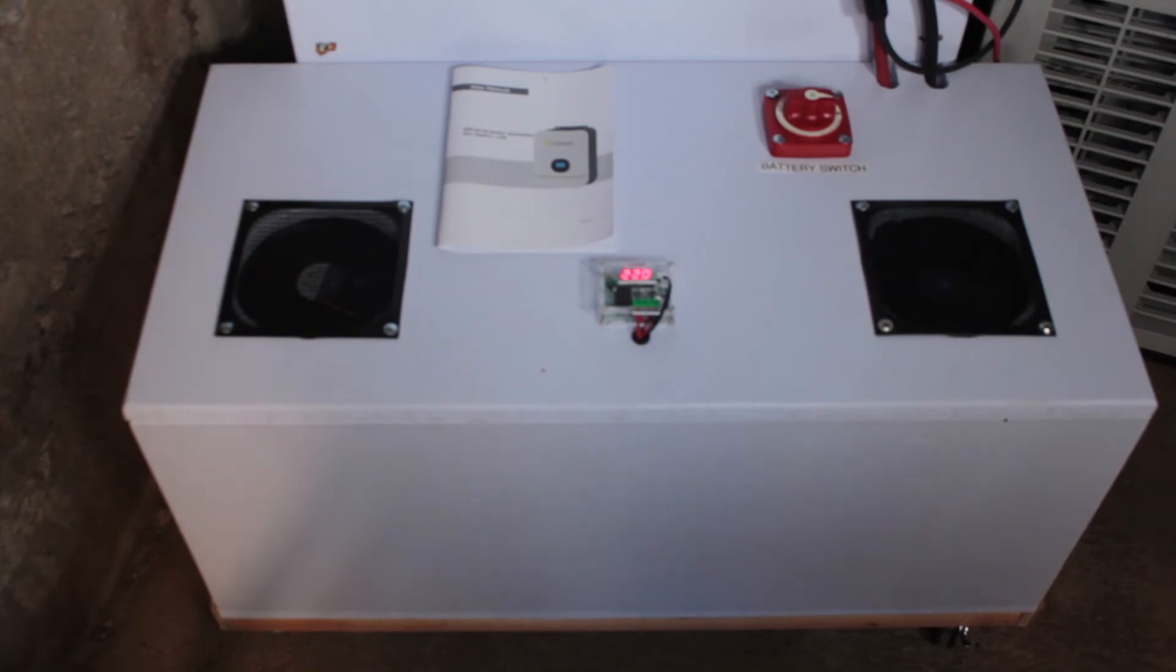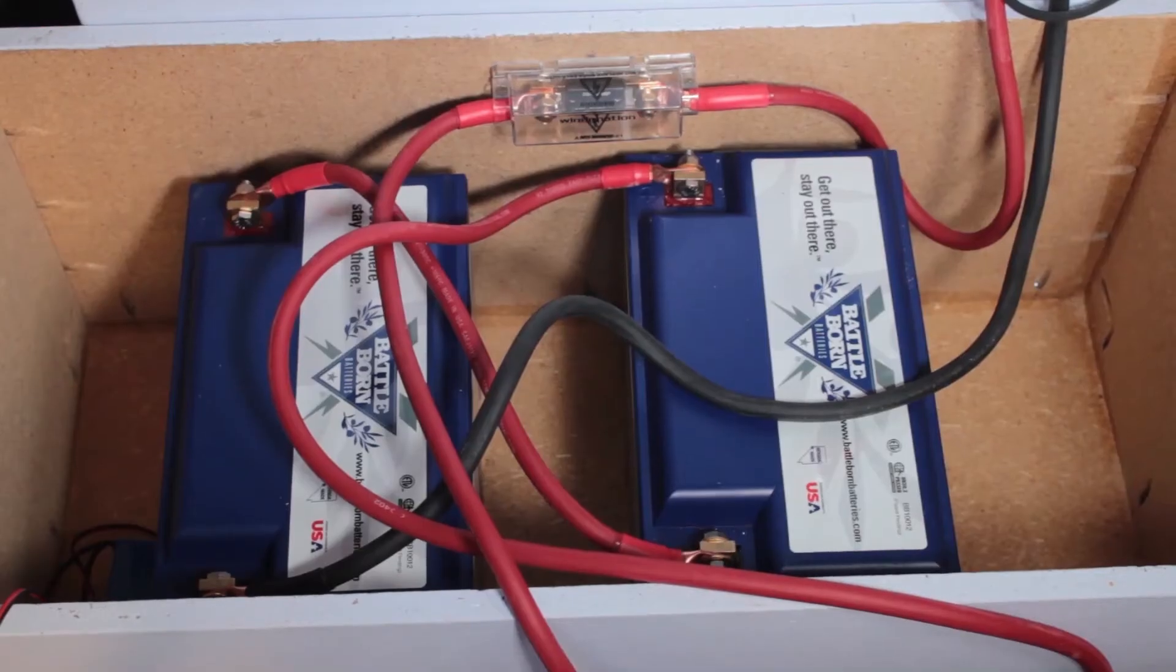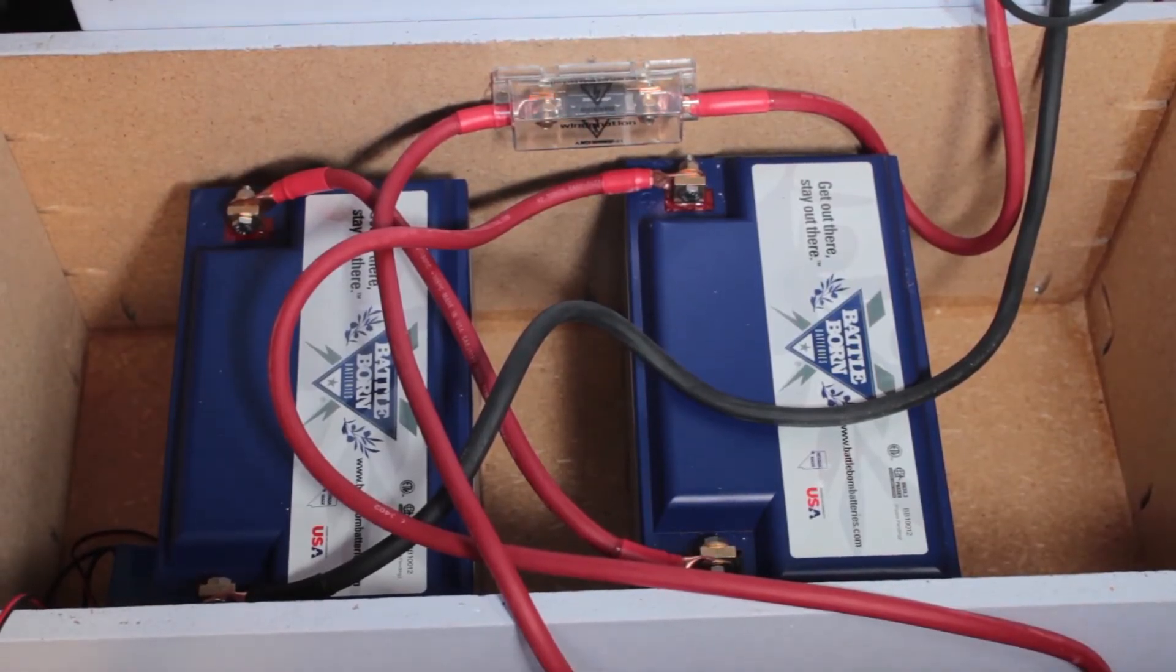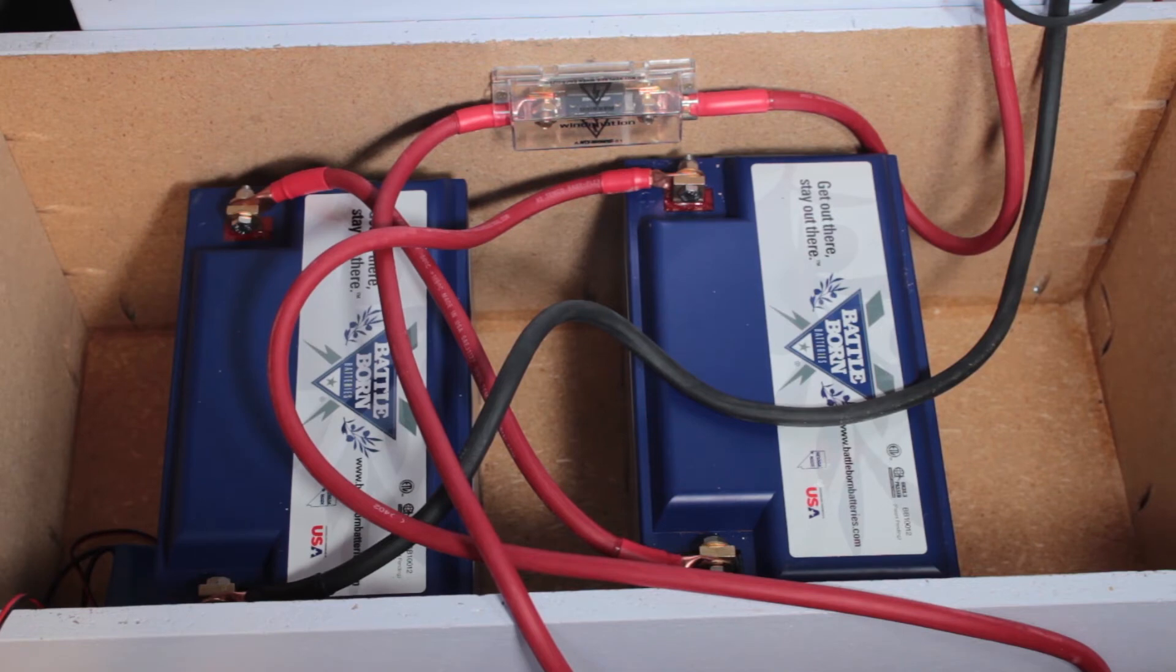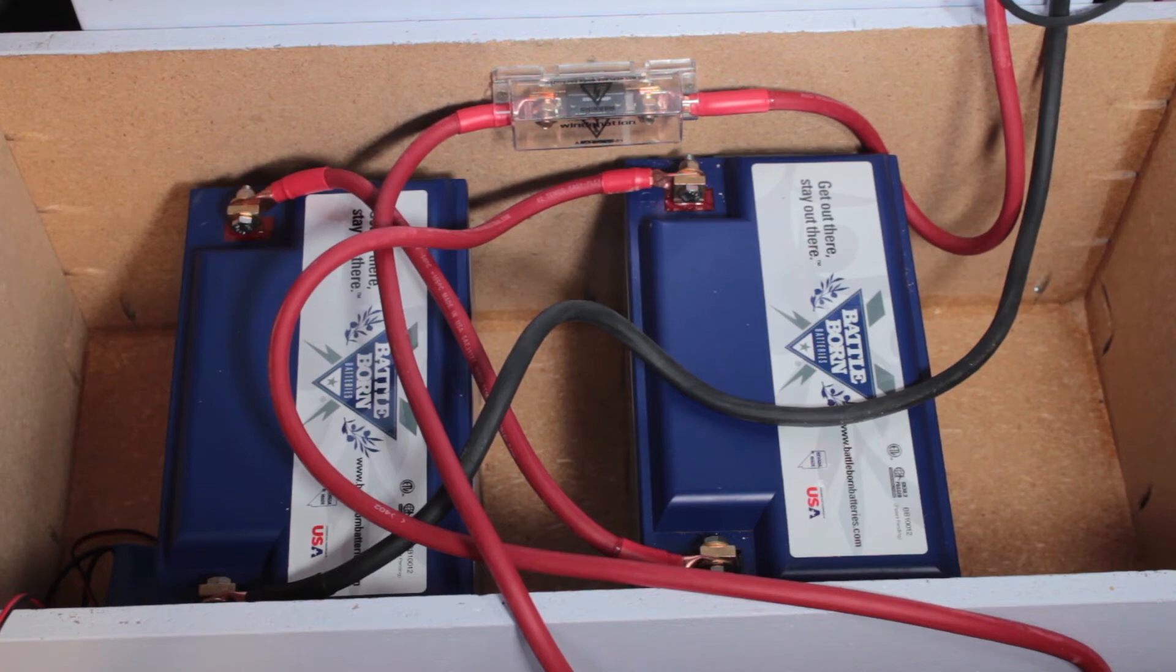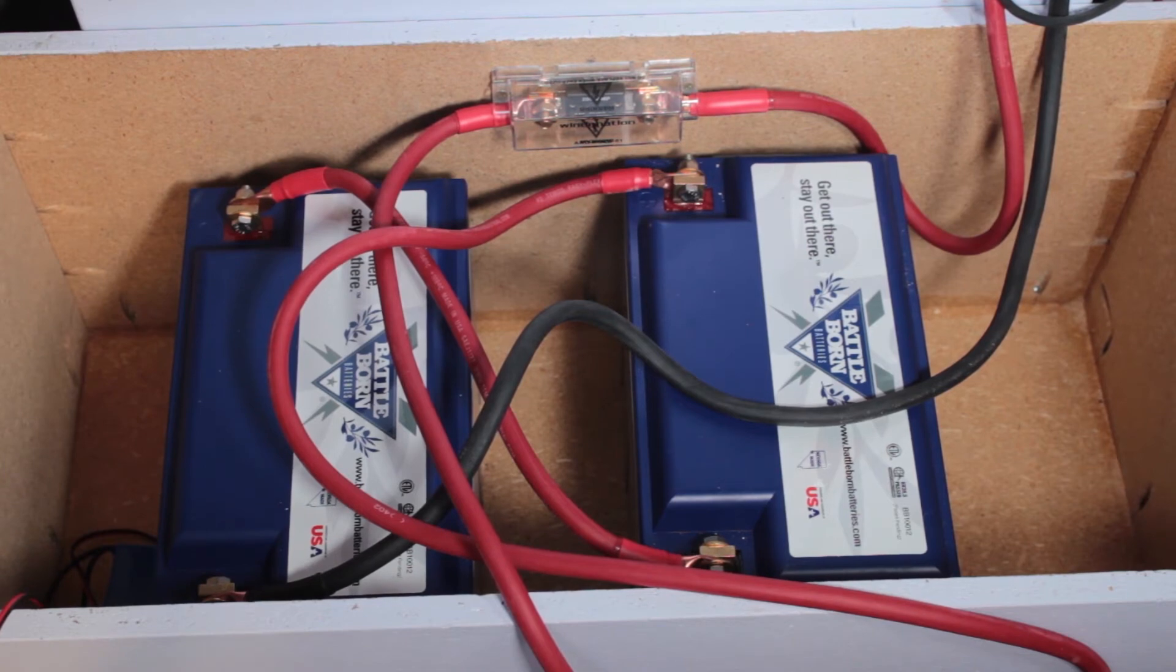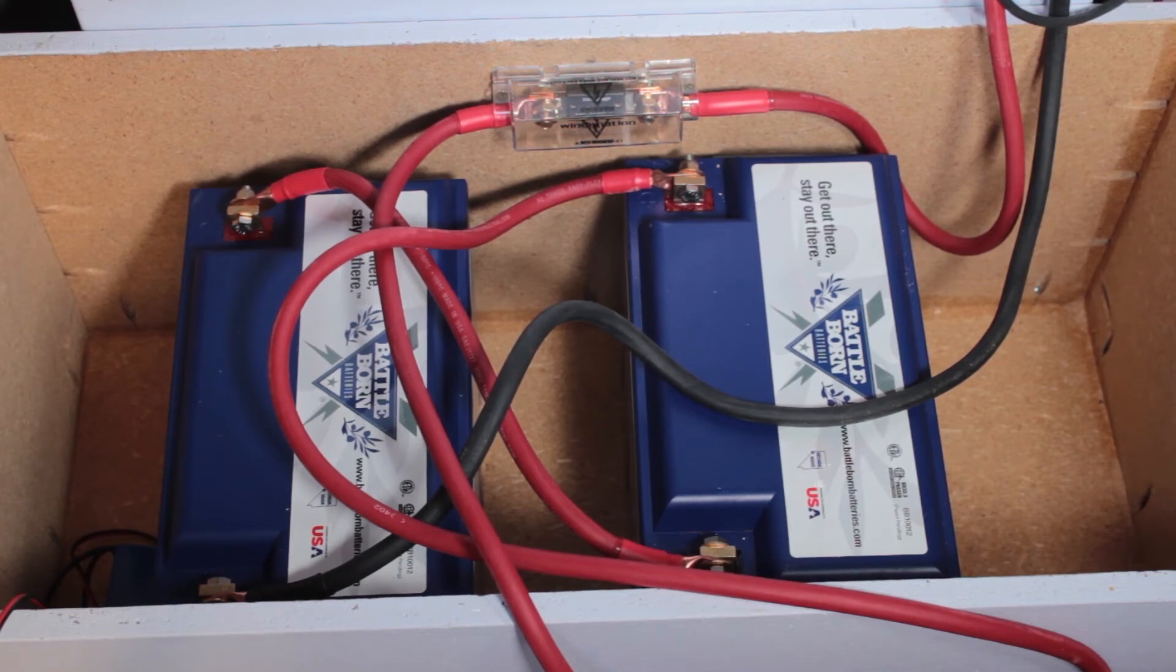Let's have a look inside. So inside the battery box we have two Battle Borns. They are the 12 volt 100 amp hour batteries. There's room for four. I designed it to hold four of them, but just under a thousand dollars each, I decided to start off with these two and see how things run.